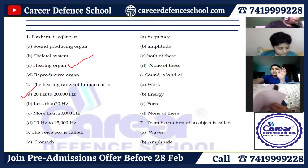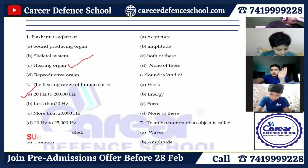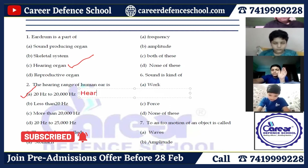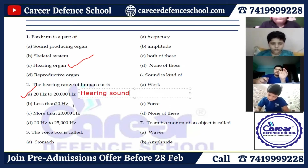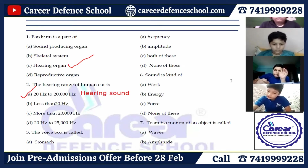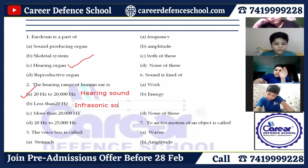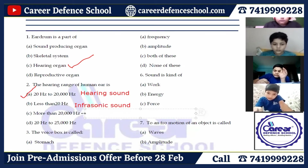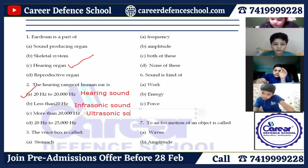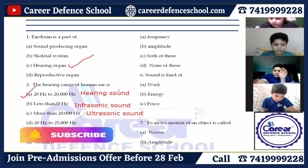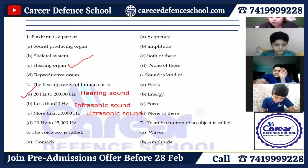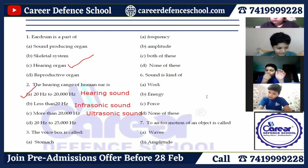These are audible sounds — the sounds we can hear. Less than 20 hertz are infrasonic sounds, and more than 20 kilohertz are ultrasonic sounds. So the hearing range, or audible sound range, is 20 hertz to 20 kilohertz. Its answer is A.